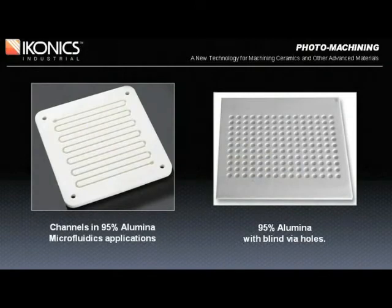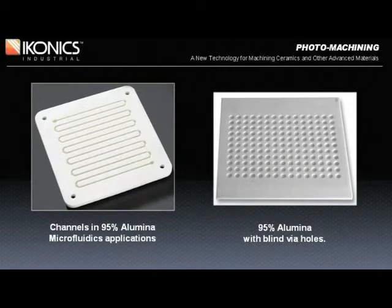Here are a couple of examples of photo machining into alumina. Both are 95% alumina — one shown with 1.7-millimeter deep channels and the other with round blind holes. The holes in this case could have been square or rectangular cavities for chip mounting, which is often required in MEMS applications.